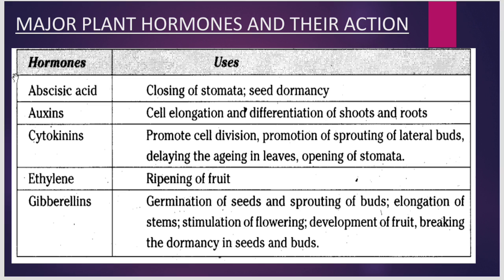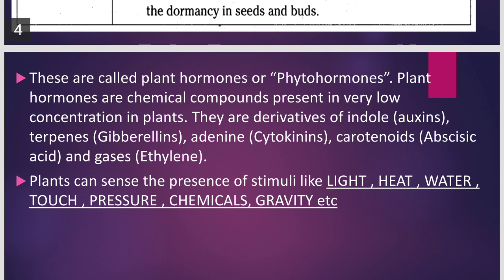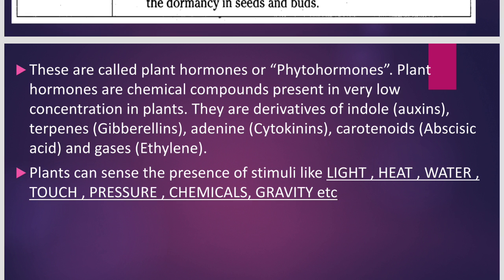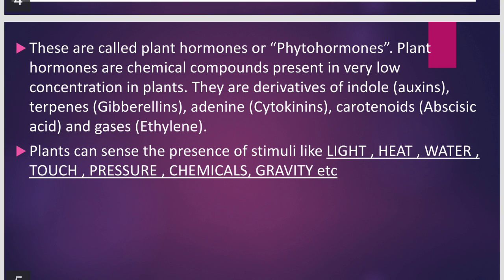Now children, all these functions and hormones are important because in exams you will be given multiple choice questions. For example, which of the following is responsible for the ripening of fruit — you must know it is ethylene; which is responsible for the closing of stomata — abscisic acid. So you should know the functions as well as the hormones. These are the hormones of the plants, called phytohormones or plant hormones.